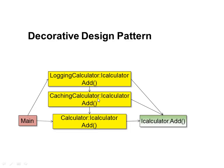While implementing the Decorator design pattern, we create separate concrete classes that each implement the same interface iCalculator, and then we implement logging and caching separately. Instead of main calling the Calculator class directly, it calls the LoggingCalculator first. Inside the LoggingCalculator it calls the CachingCalculator, and inside the CachingCalculator it calls the actual Calculator, which adds the two numbers and returns the result back up the chain.